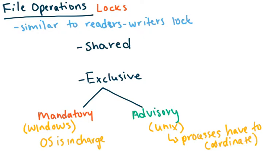Why not just use one approach all the time? The real drawback of mandatory locks is that they can cause deadlock and starvation. If a process grabs a file under a mandatory lock and never releases it, anyone else trying to grab that file will always be blocked, causing a lot of idle time. Even if done properly, mandatory locks can still cause a lot of deadlock.